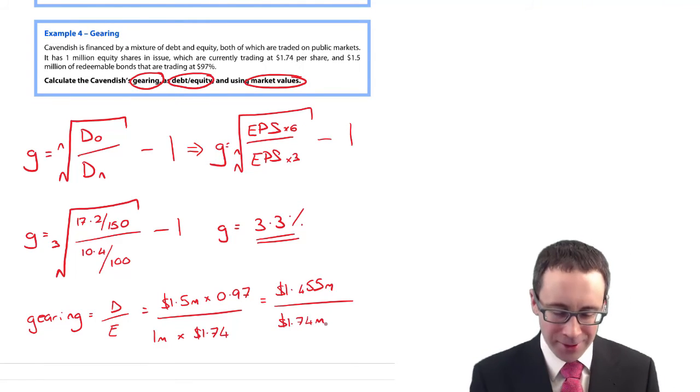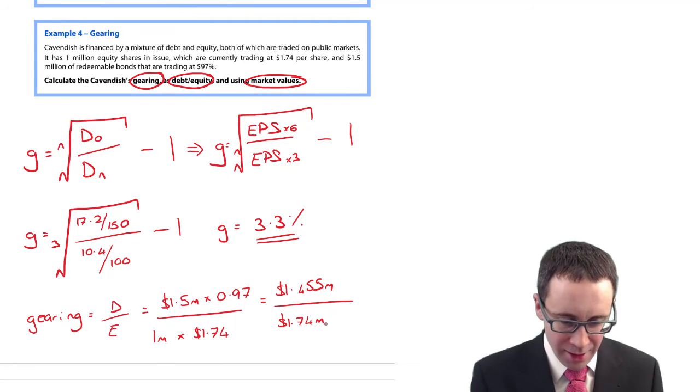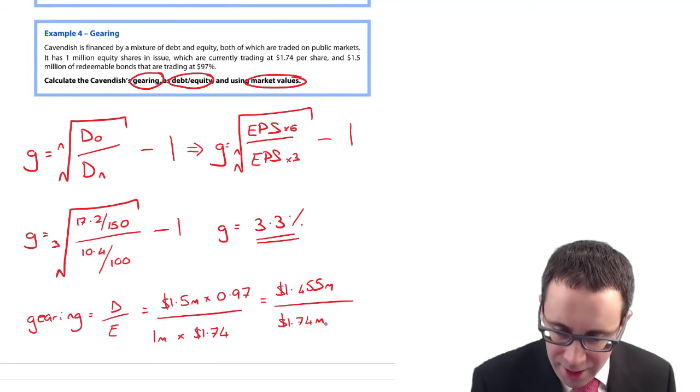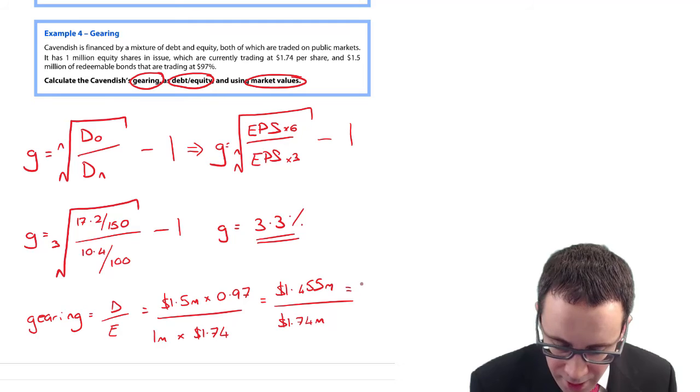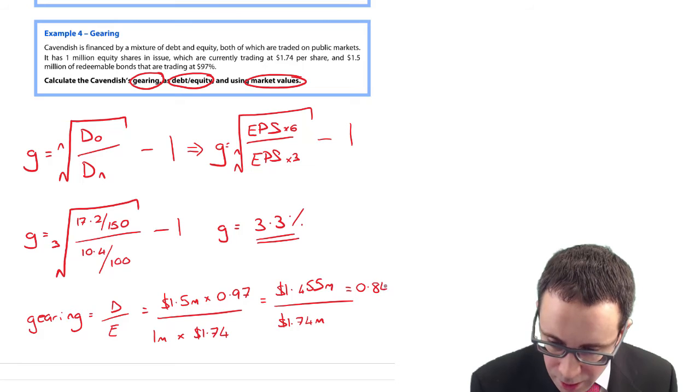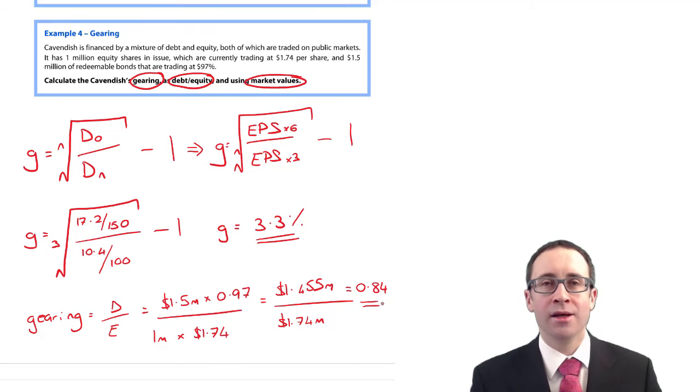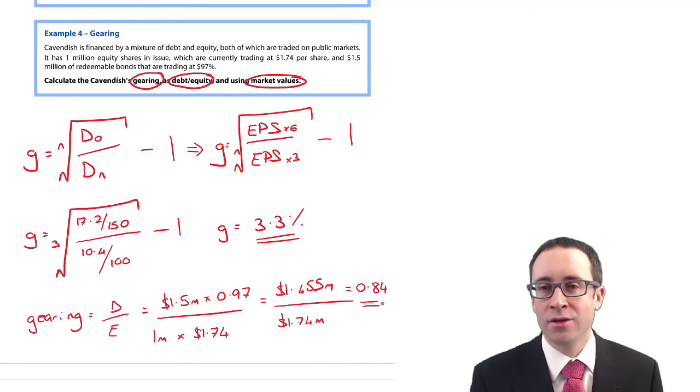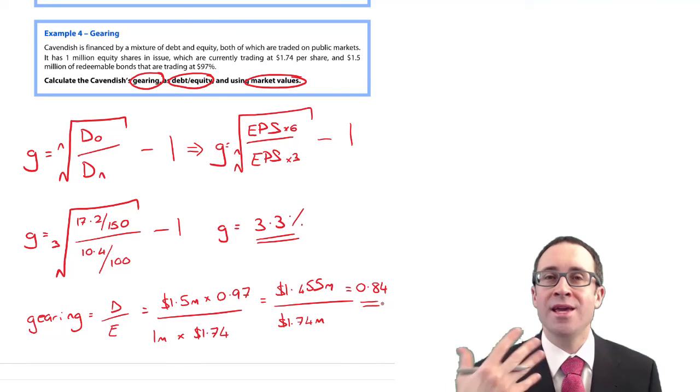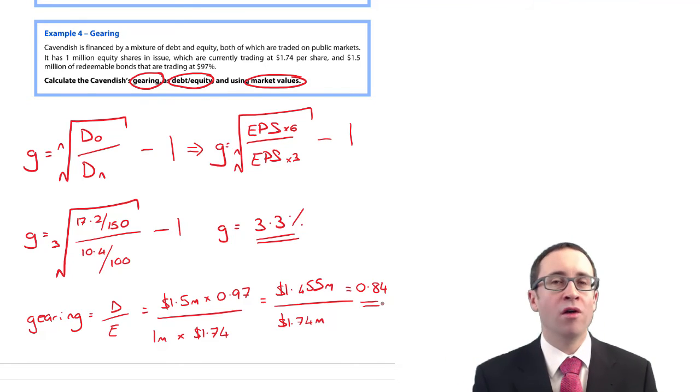$1.5 million divided by 1.74 million. Tapping that into your calculator gives you 0.84, or if you like, 84%. For every dollar of equity, there is 84 cents of debt within this business.